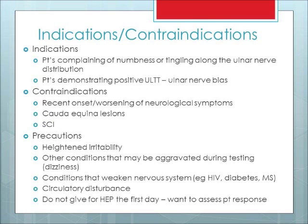This slide summarizes the indications and contraindications for ulnar nerve neuromobilization. Indications include a patient complaining of numbness or tingling along the ulnar nerve distribution, and a patient demonstrating a positive upper limb tension test with an ulnar nerve bias. Contraindications include recent onset or worsening of neurological symptoms, cauda equina lesions, or spinal cord injury.